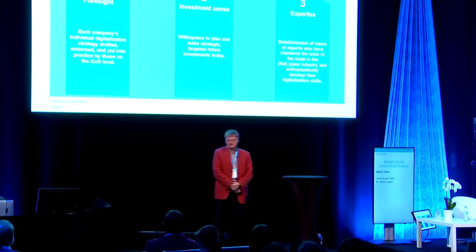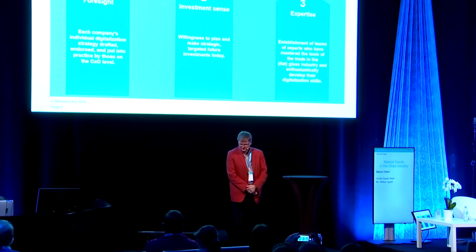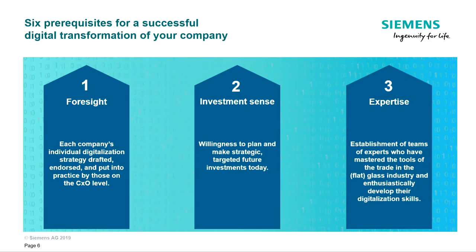Here are the social prerequisites. Foresight — it starts with management attention and management involvement and engagement. They need to like it, they need to want it, they have to implement this with foresight. You want to be aware: where do you want to be in five or ten years from now? This is how everything starts.